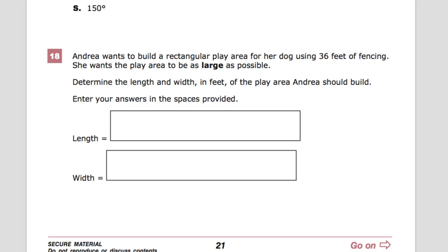Welcome. This is question 18 from the TinReady Practice Test for Geometry. The question says Andrea wants to build a rectangular play area for her dog using 36 feet of fencing. This is all the fencing she can use, so we have to make sure that we don't overextend ourselves. She wants the play area to be as large as possible.